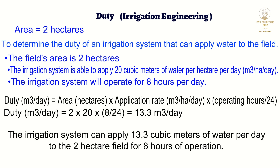In this video we have discussed the concept of duty in irrigation engineering and how it is calculated using specific examples. We have seen how it is a measure of the amount of water that can be applied to a field over a given period of time, and how it is an important factor in the design and operation of irrigation systems. We have covered the factors that influence duty, including the water source, water distribution system, soil and weather conditions, and crop type and water requirements. Thank you for watching.